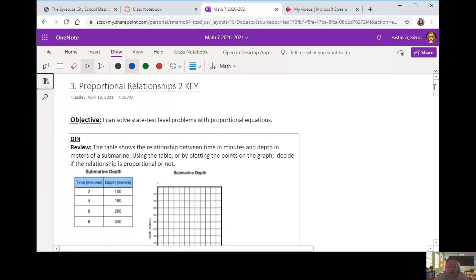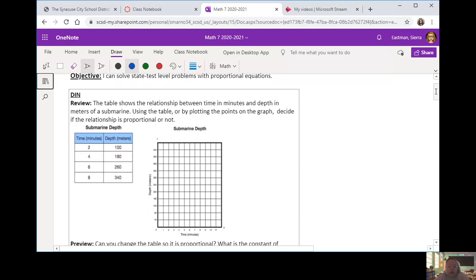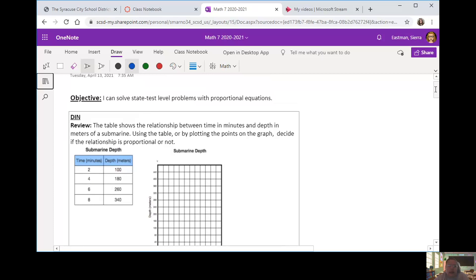We have some state test level problems with proportional equations. On Tuesday, you solved some proportional tables and proportional graphs, just determining if they were proportional or what the constant of proportionality was. Now, we're going to use that constant of proportionality to make proportional equations, taking it just a step further.